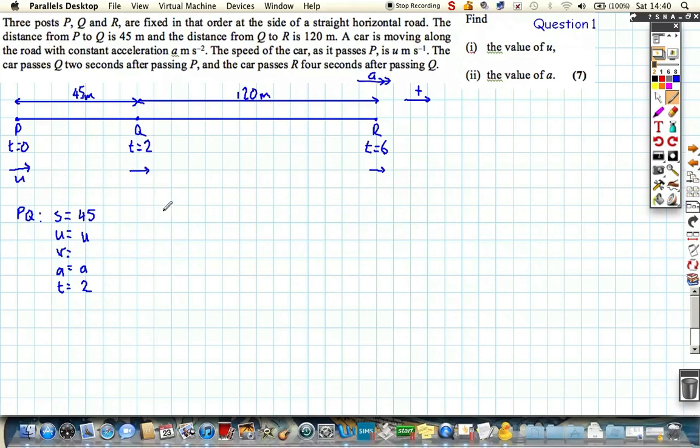ut plus half at squared. Put in what we have got: we've got 45 equals 2u plus 2a. So 2 squared is 4, divided by 2 is 2, 2 times a. And we'll call this equation number one.